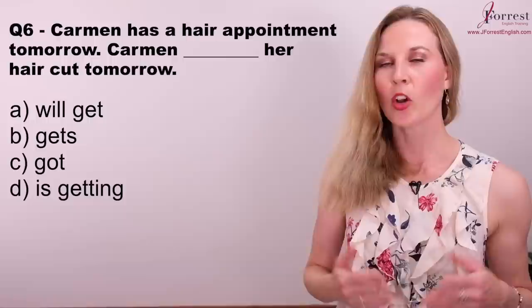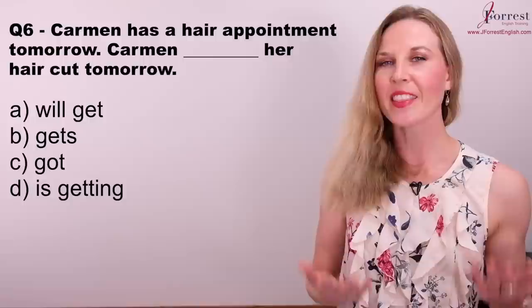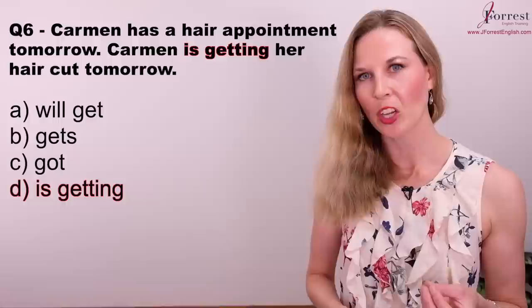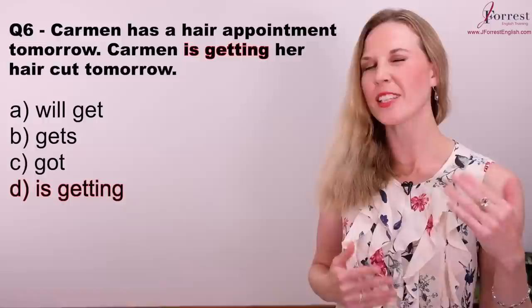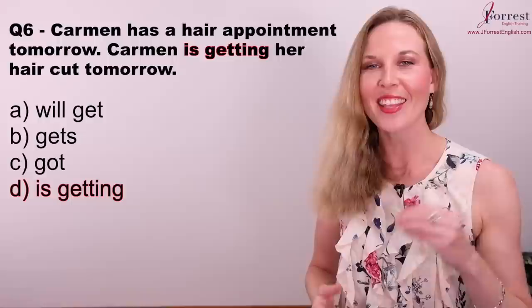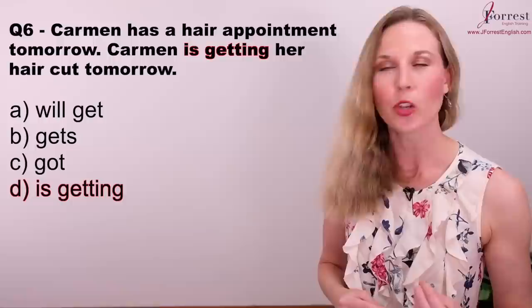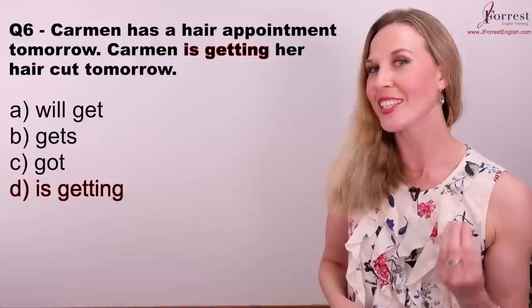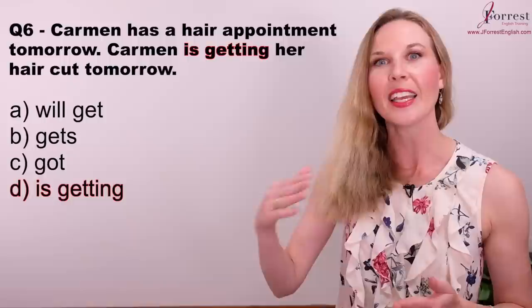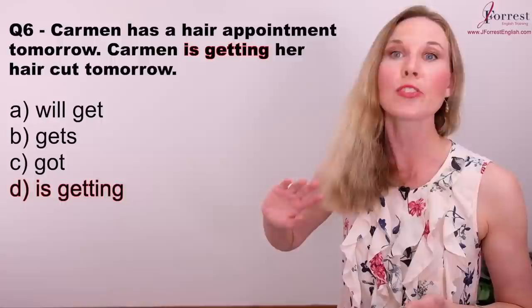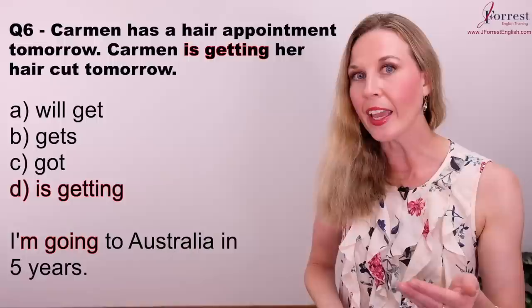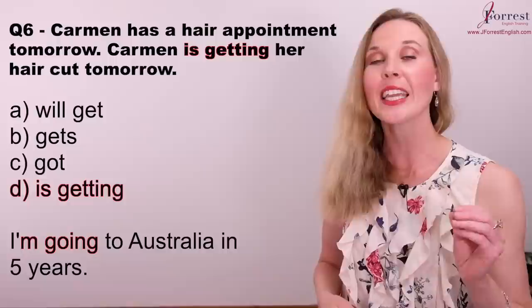Question six: Carmen has a hair appointment tomorrow — Carmen is getting her haircut tomorrow. The first sentence provides context showing there's a scheduled event. We use the present continuous, not the future simple, when talking about a scheduled event in the future. Even if you have a plane ticket to Australia in five years, it's still a scheduled event: I'm going to Australia in five years.